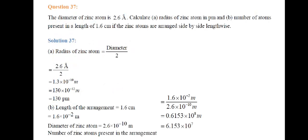Next: The diameter of a zinc atom is 2.6 Ångströms. Calculate the radius of the zinc atom in picometers and the number of atoms present in a length of 1.6 centimeters if zinc atoms are arranged side by side. Radius = diameter / 2 = 2.6 Å / 2 = 1.3 × 10⁻¹⁰ meters = 130 picometers. Length of arrangement is 1.6 centimeters.